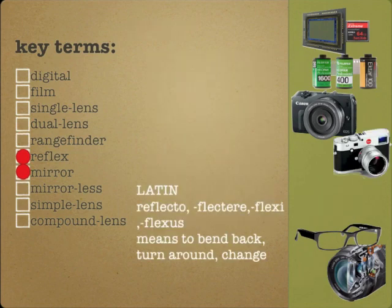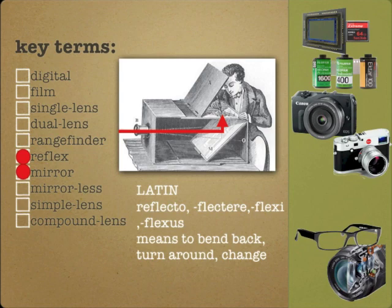Reflex. This is the term that represents the R in DSLR. Reflex is simply derived from the Latin term for 'reflect' and means to bend back, turn around, or change. Essentially, it just means it's a reflection — and that's how it's related to the mirror.